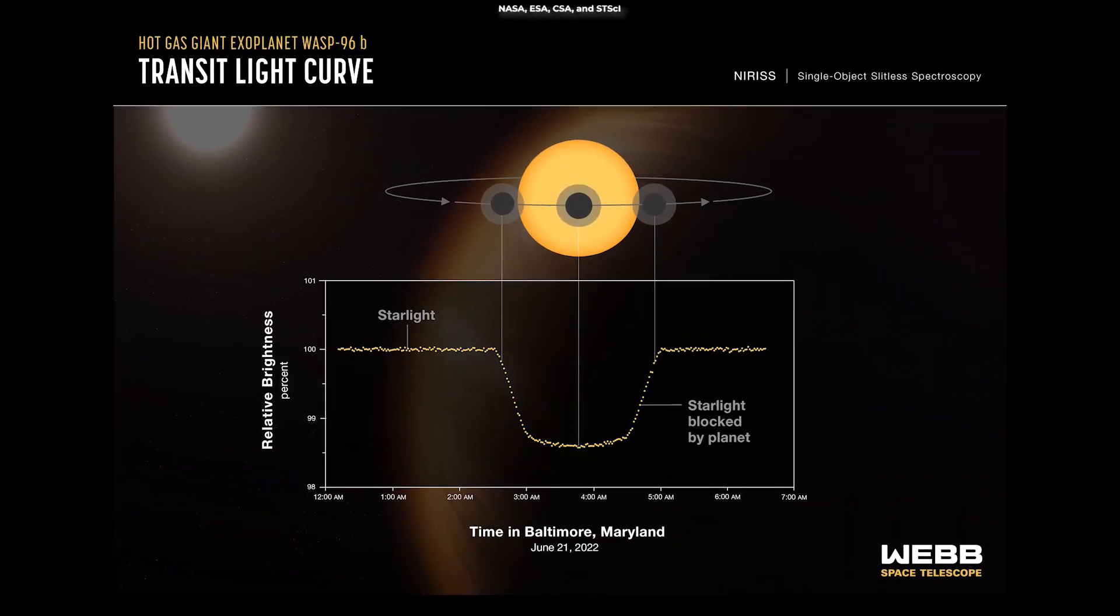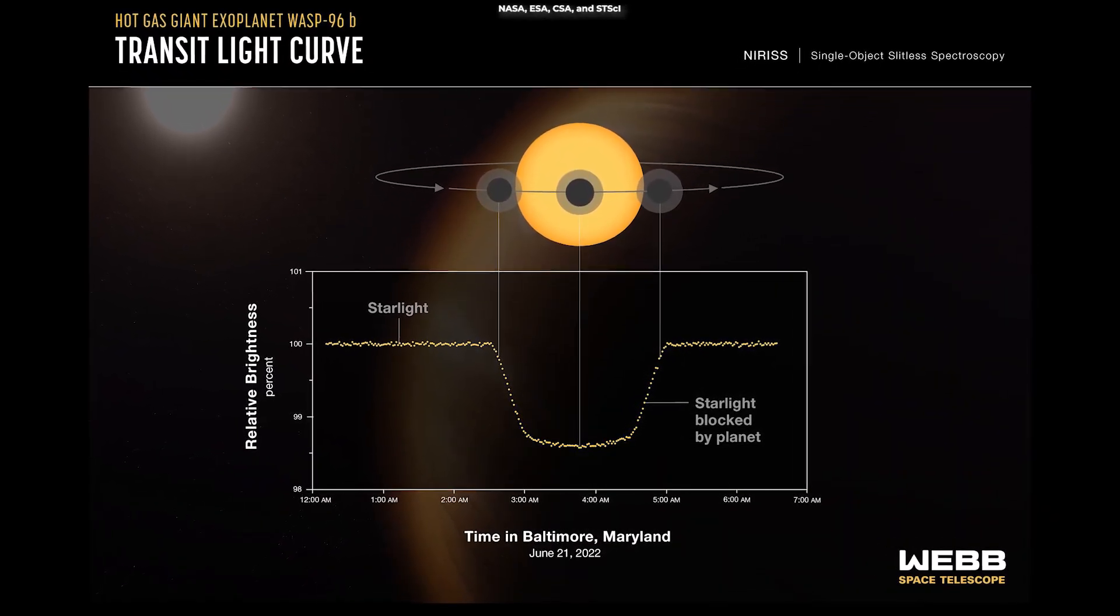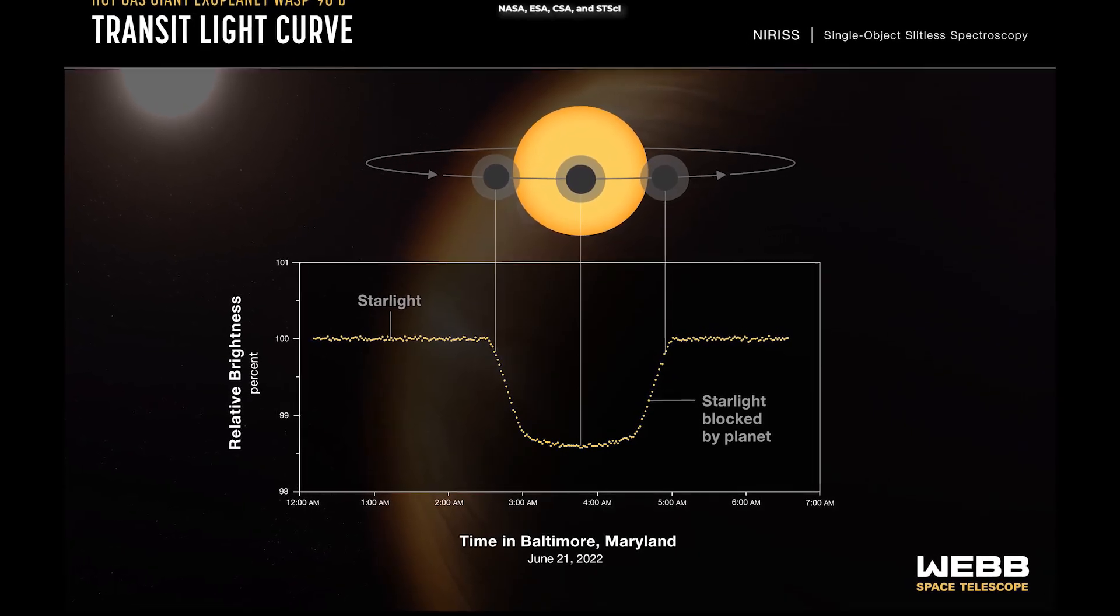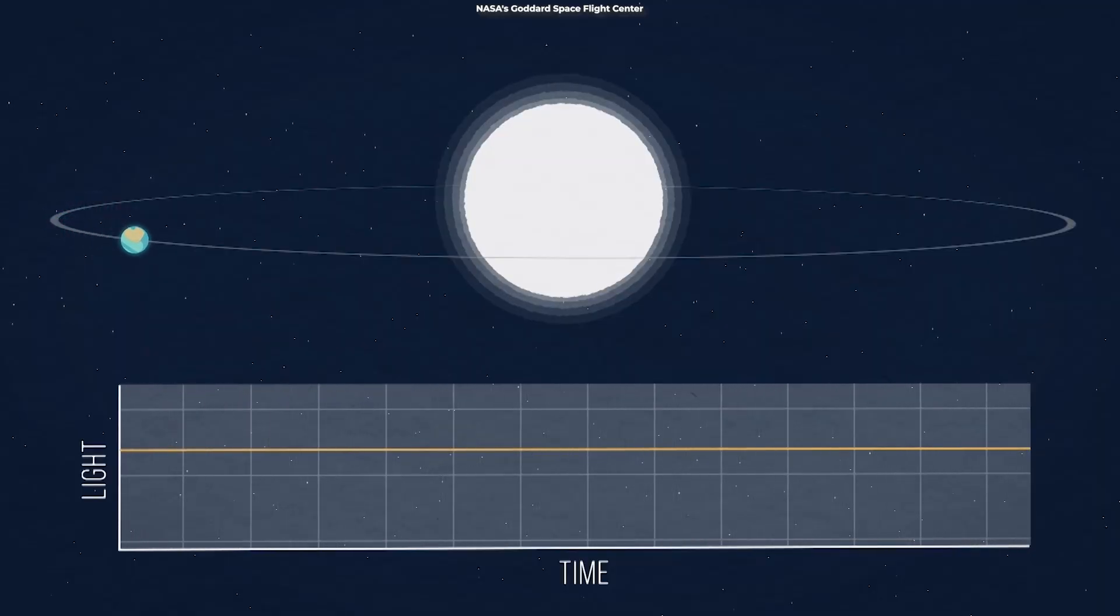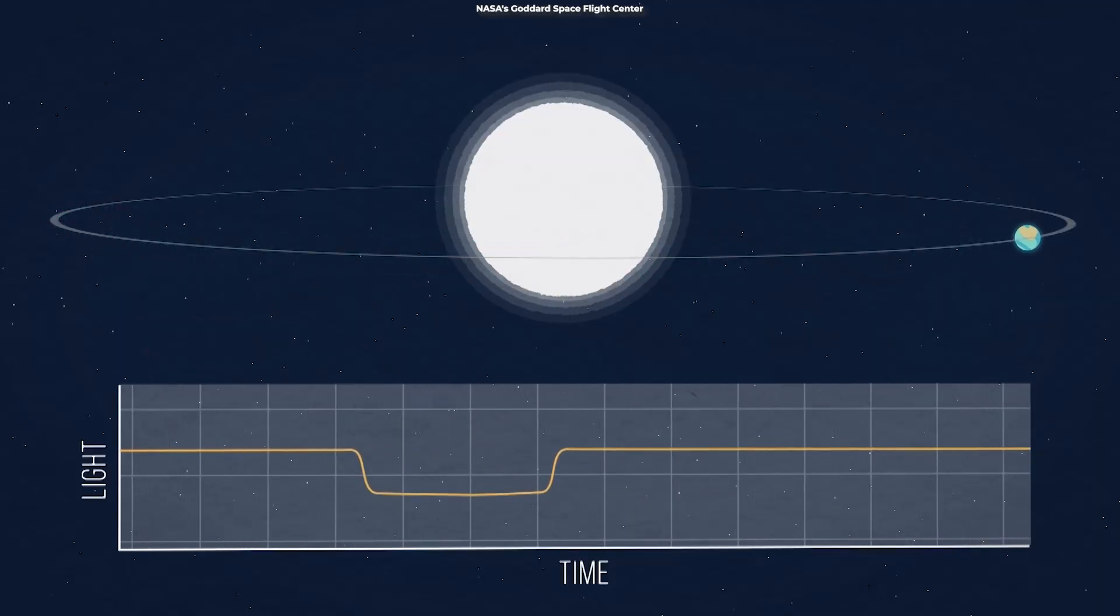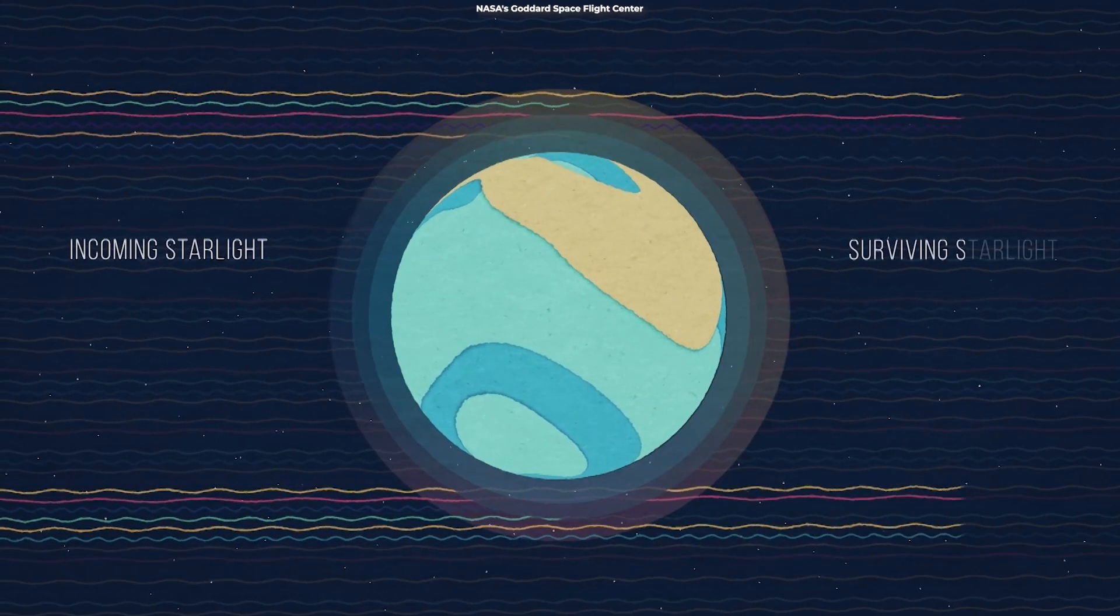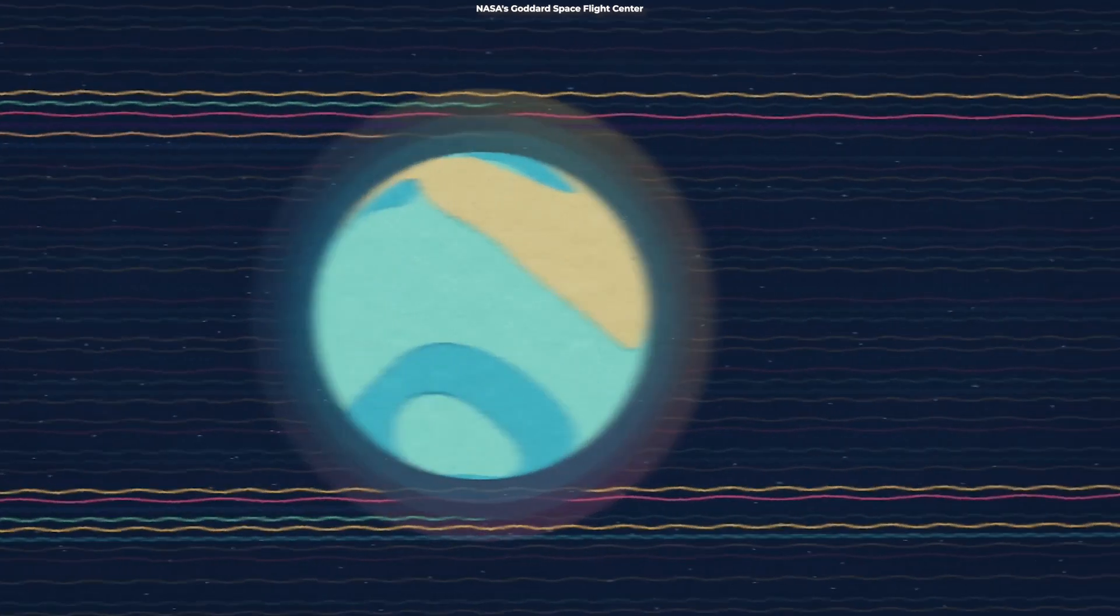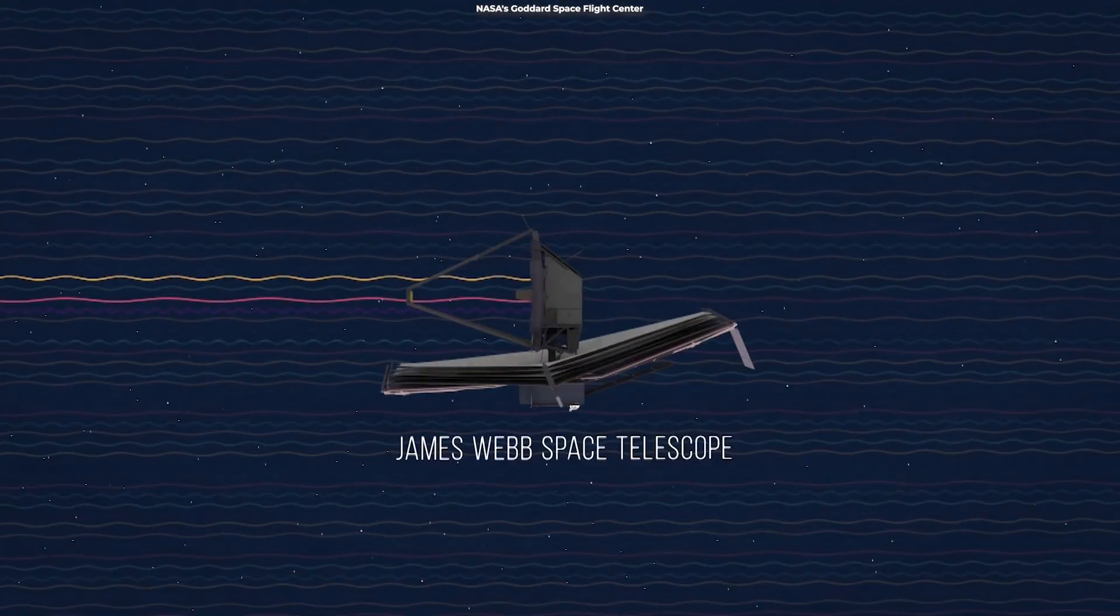Webb also captured this light curve of the brightness of WASP-96b's parent star over time. As the planet transits the star's disk, its light dims. Though aspects of WASP-96b were known, Webb's data adds more detail to existing measurements.